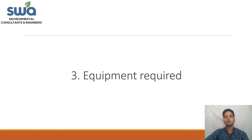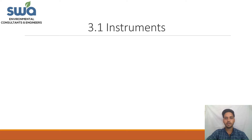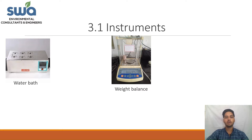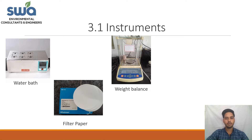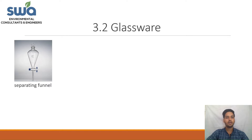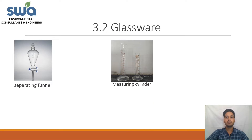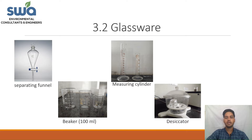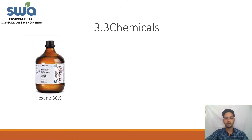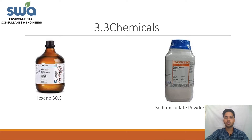For the analysis, we require some instruments, glassware, and reagents. In instruments: a water bath for the evaporation process, a weight balance for pre- and post-weighing the beaker, and filter paper and pH strips for measuring sample pH. In glassware: a separating funnel, a measuring cylinder, a beaker, and a desiccator. For chemicals, we require only two: N-hexane as the solvent, and sodium sulfate powder to soak moisture from the extract.